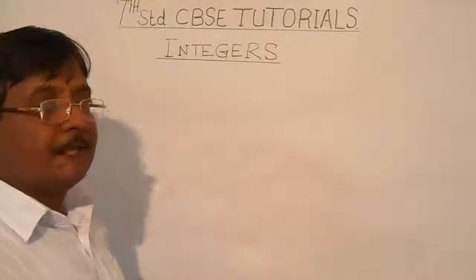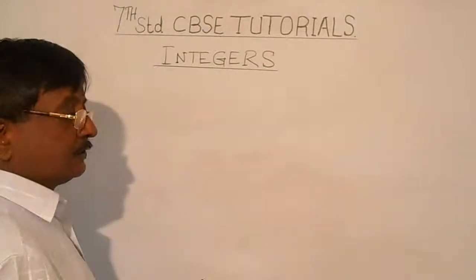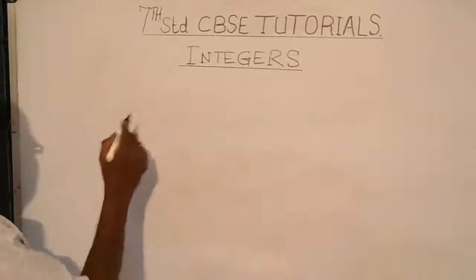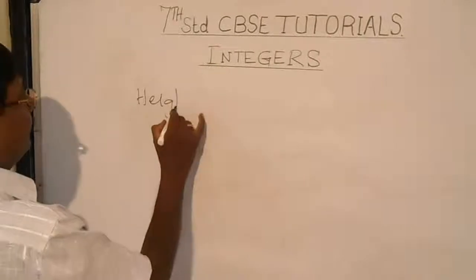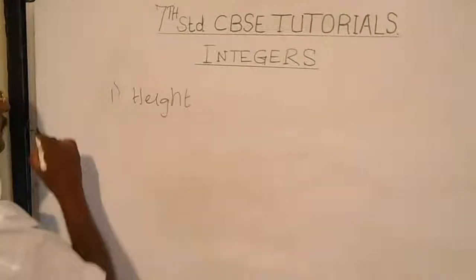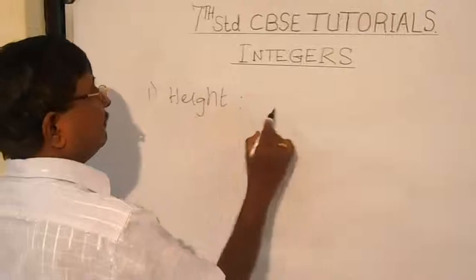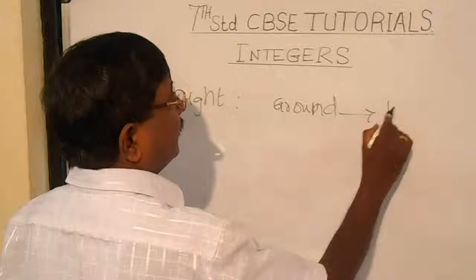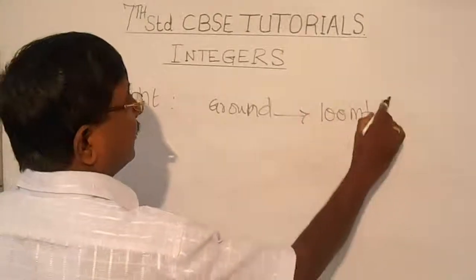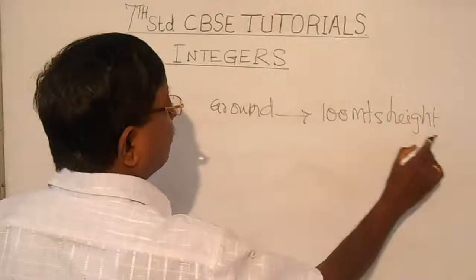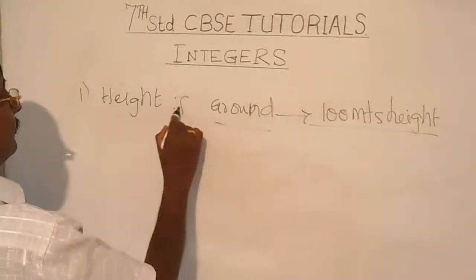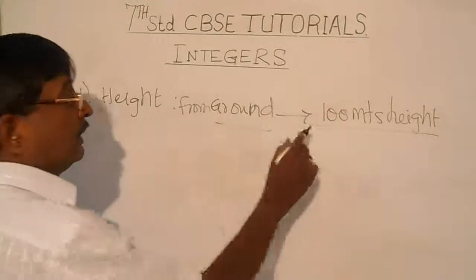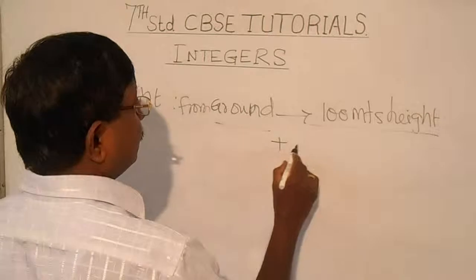In our day-to-day life we can experience positiveness and negativeness. For example, take height. Height from the ground level — say this is from the ground, 100 meters high from the ground level. This height can be represented as a positive value.